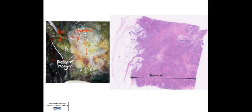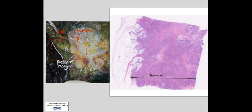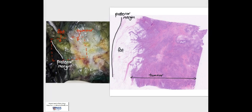This is the histological image of the tumour on the right and the corresponding gross image on the left. At low power, the tumour occupies the whole of the pink area and appears to infiltrate the adjacent fat. The tumour is some distance away from the posterior margin, which corresponds to the gross section.